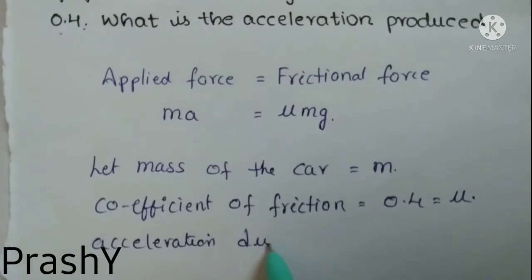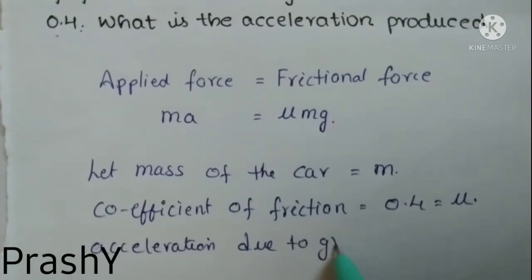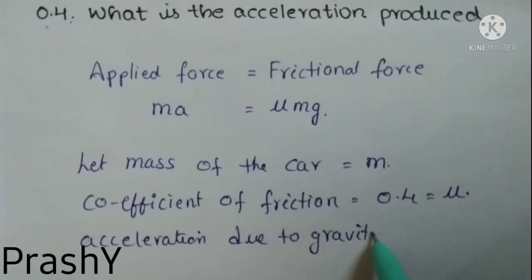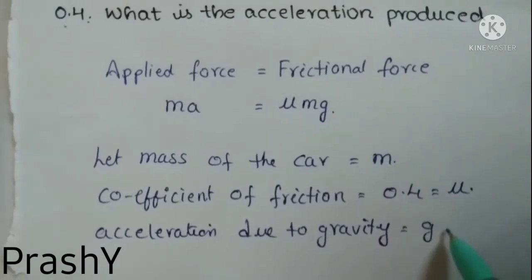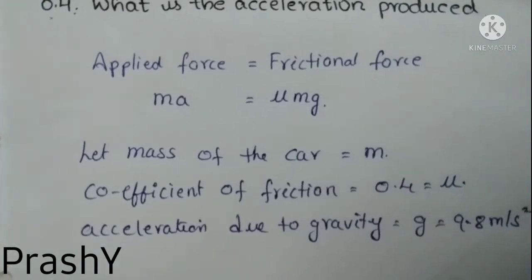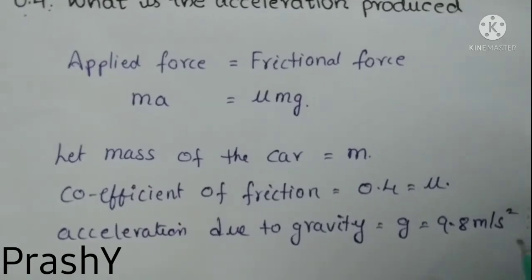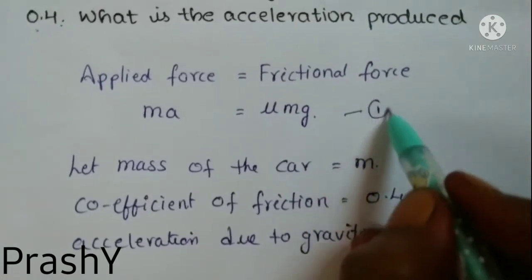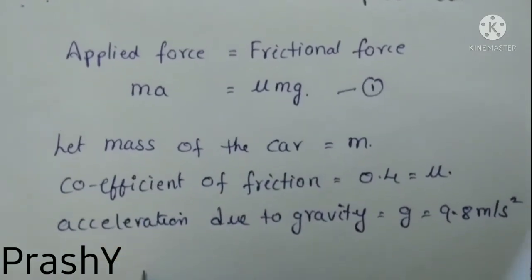In the above equation (equation 1), we are going to substitute. So ma equals μmg. On both sides, mass gets cancelled, so a equals μg.